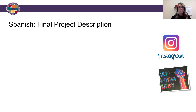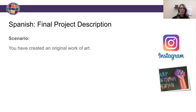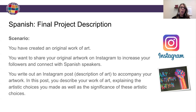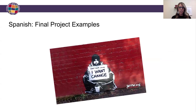I didn't grade their art — it was a completion grade. I'm not grading anyone on their artistic ability. There was another component to the final project: I gave students a scenario and basically said, you've created an original work of art, now you want to share it on Instagram. You're going to write an Instagram post talking about the artistic strategies you used in your art. It was a longer post for a third semester Spanish course, but those who use Instagram know blog-length posts are common. We looked at many texts mirroring artistic descriptions throughout the unit.